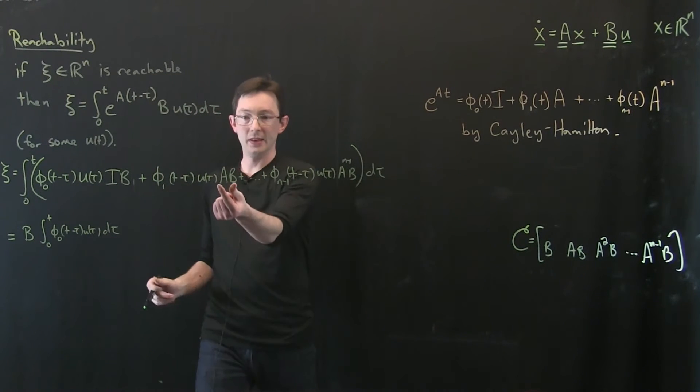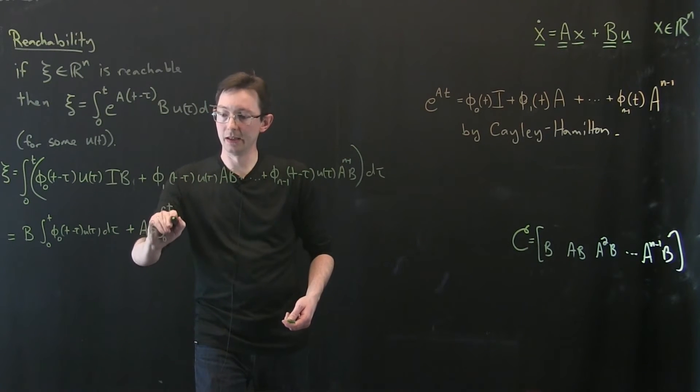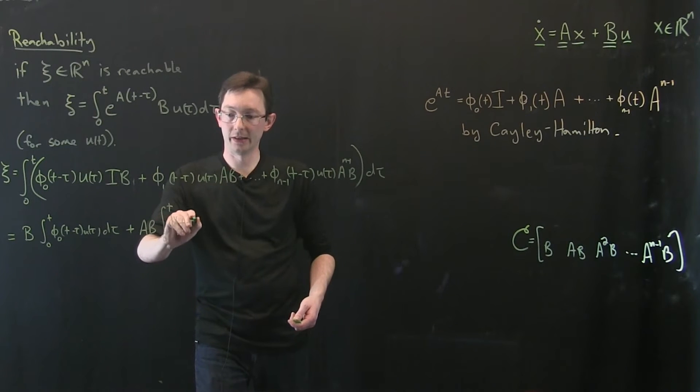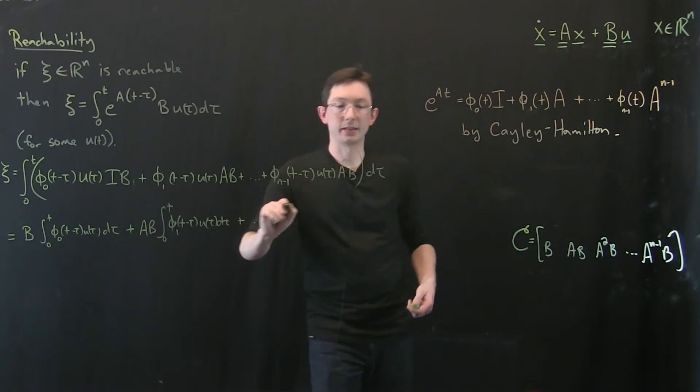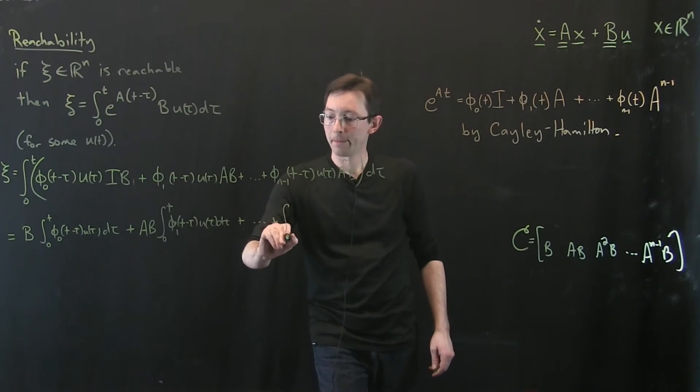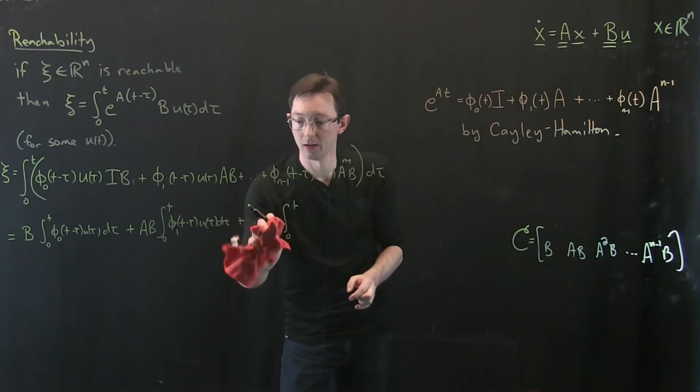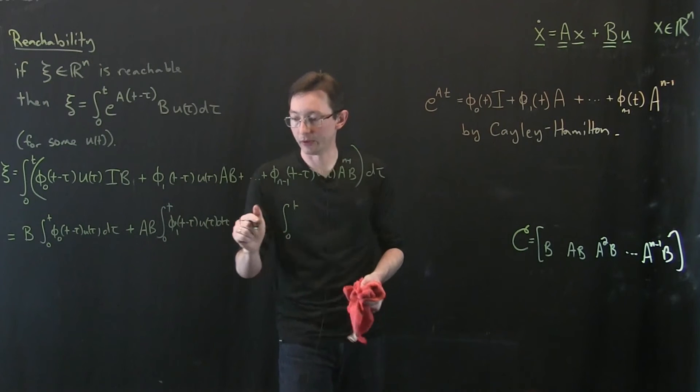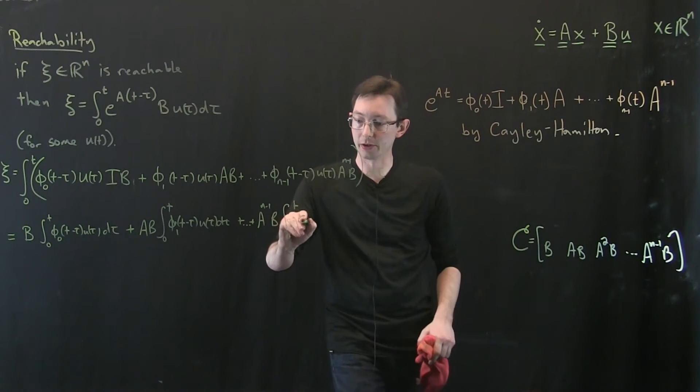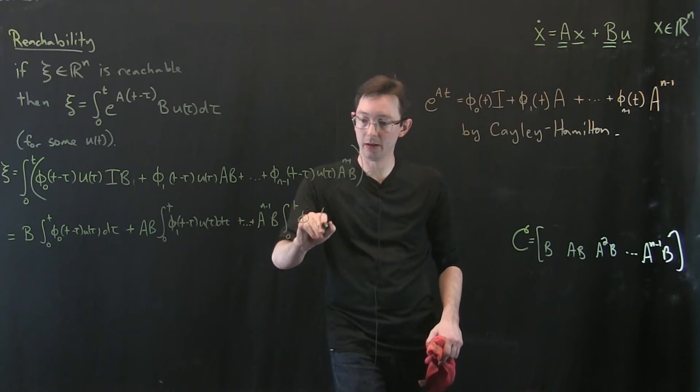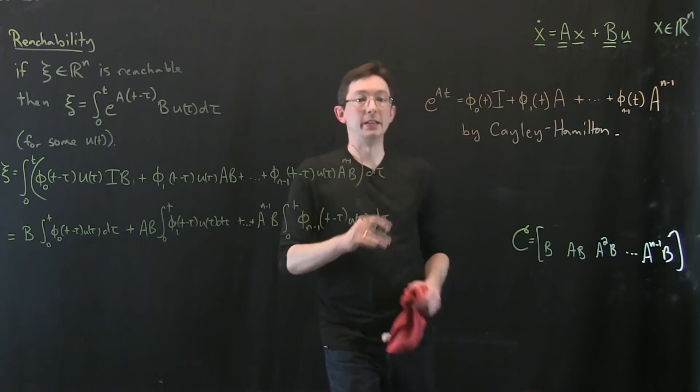Okay, so that's one integral. This one plus Ab integral 0 to T, now of φ₁(T-τ) u(τ) dτ plus dot dot dot. Okay, so now we're splitting this up into separate integrals. Integral 0 to T of this matrix. Sorry, I need to pop that out front. So I've got plus dot dot dot plus A^(n-1)b times this convolution. φₙ₋₁(T-τ) u(τ) dτ.